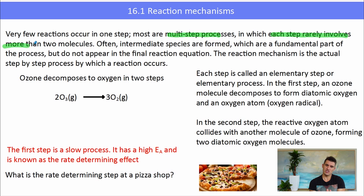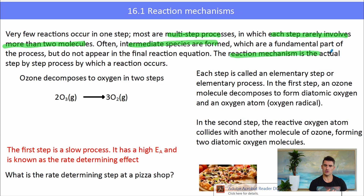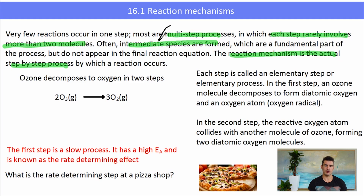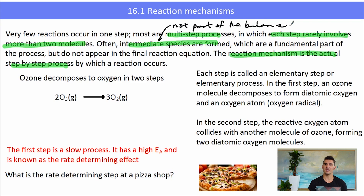Most reactions involve a multi-step process, and reactions rarely involve more than two molecules. So there are intermediate species that are formed. A reaction mechanism is the step-by-step process by which a reaction occurs. An intermediate that is formed is never part of a balanced chemical equation — it must be formed and then used somewhere else in the equation.